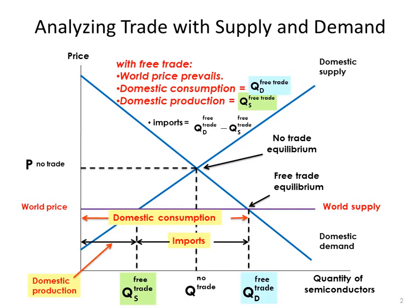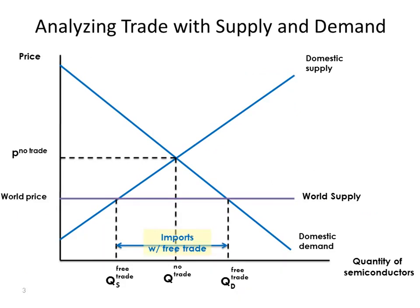Make sure you understand each step in this diagram, because when we add tariffs the diagram gets more complicated. Each step is actually pretty simple — no different than the ones we've already done — but the diagram will look a little messier. Now let's do the same diagram but with a tax or tariff. With free trade, the quantity demanded is here, the quantity supplied domestically is here, and the difference between them is imports with free trade.